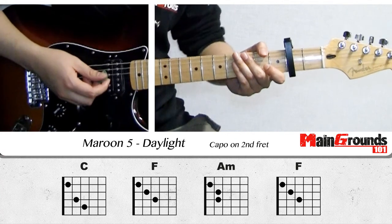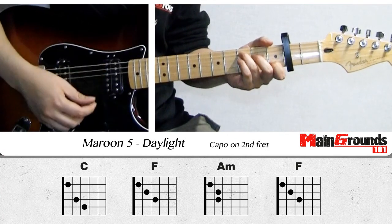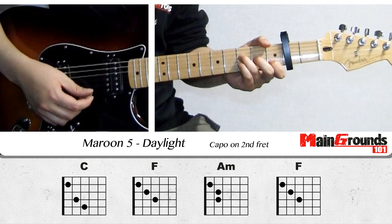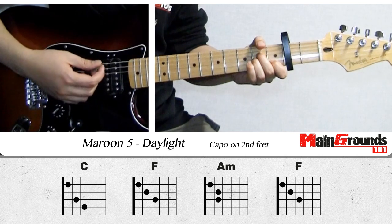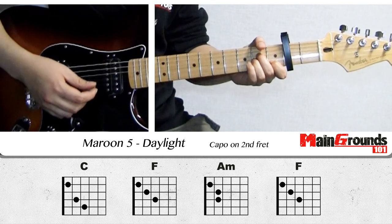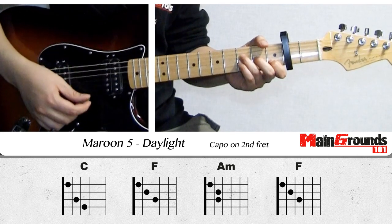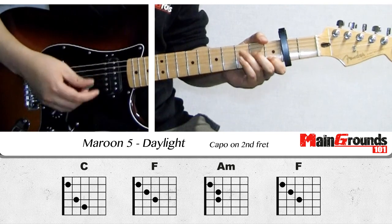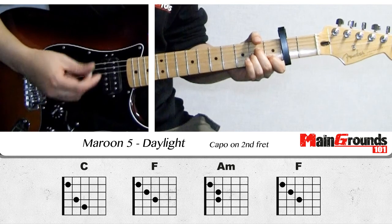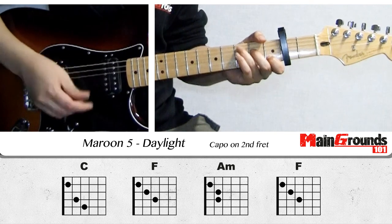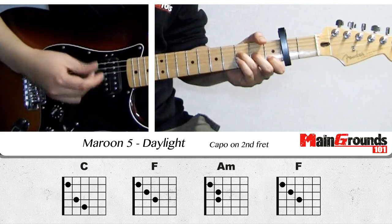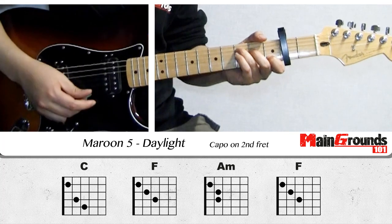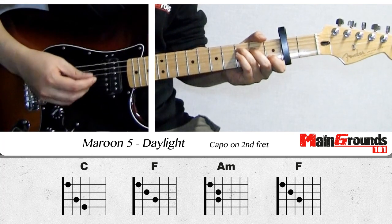Let me go to the pre-chorus. That one starts with the C chord, then an F chord, and after that you get the A minor, another F chord, and another F chord.